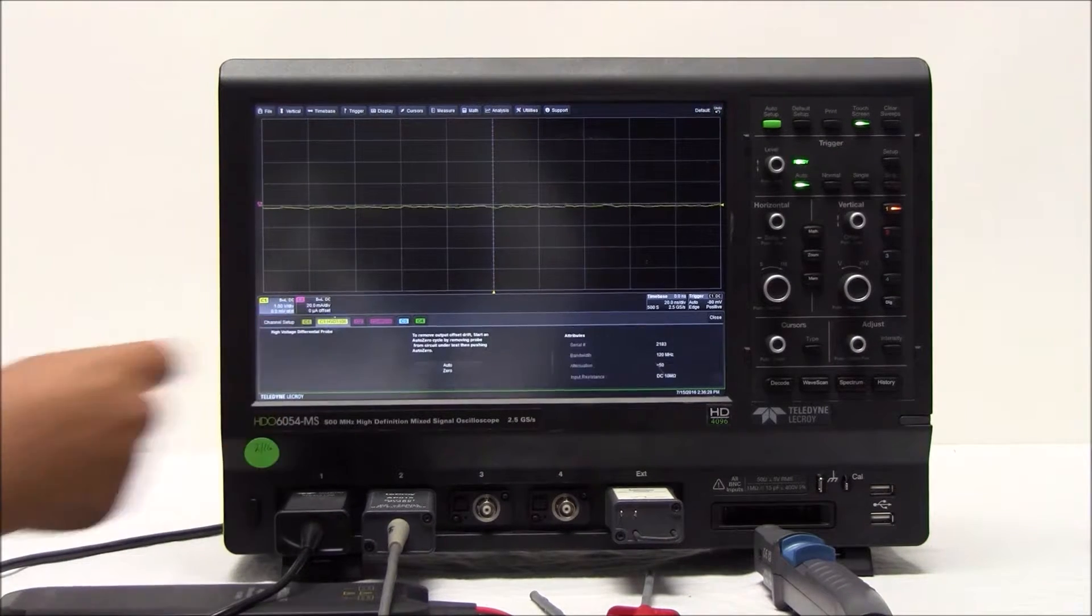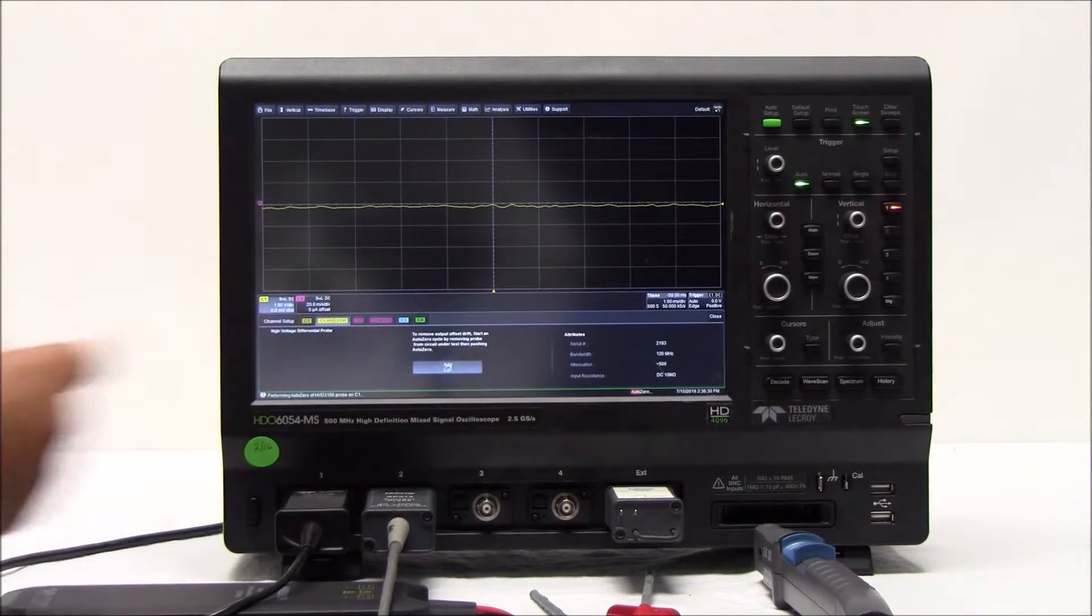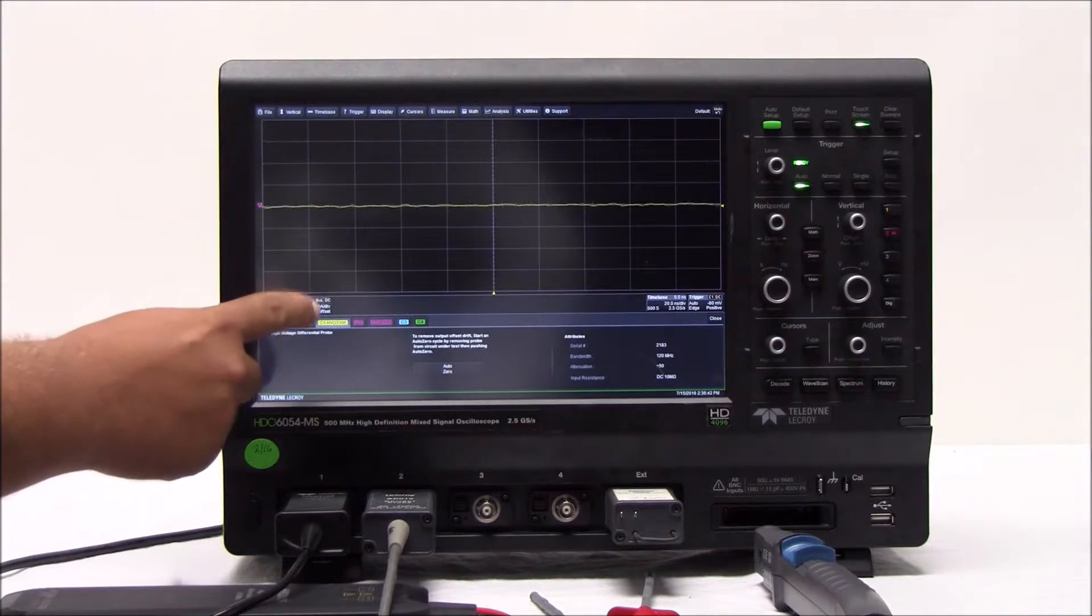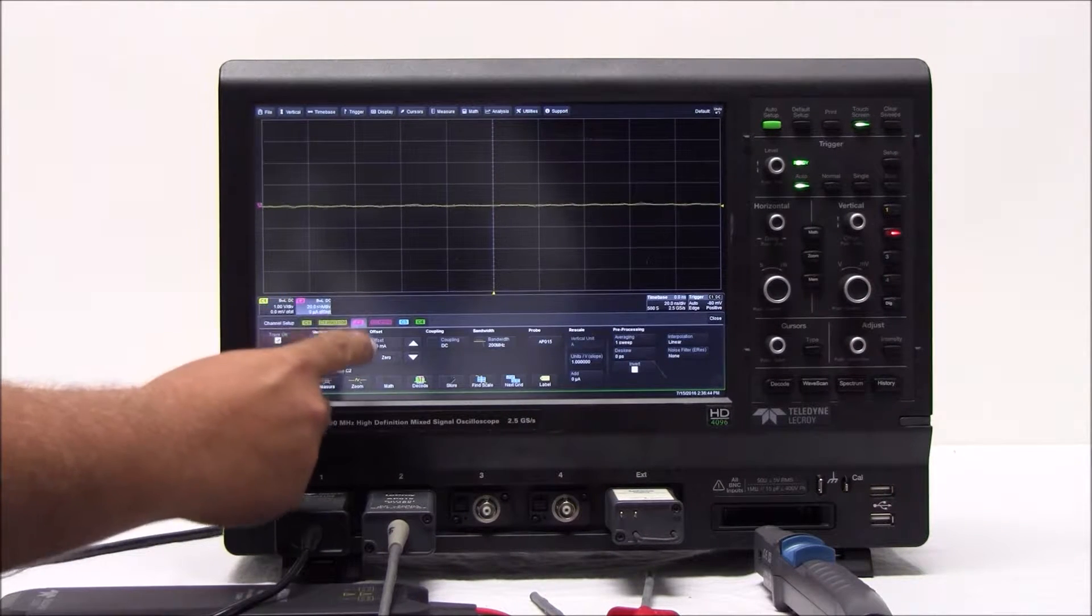We select channel 1 dialog box in the probe tab and select AutoZero. Then we select channel 2, the probe tab, and select AutoZero for the current probe.